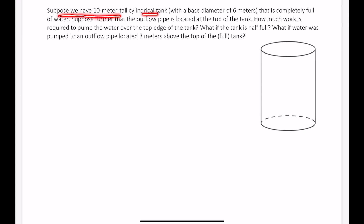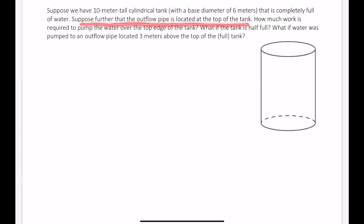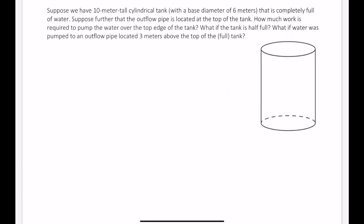Suppose we have a 10-meter tall cylindrical tank with a base diameter of 6 meters that is completely full of water. Suppose further that the outflow pipe is located at the top of the tank. Let's begin by labeling our sketch. We know the height of this tank is 10 meters, so I'm going to set the y-axis to start at the base and go vertically upwards, and the x-axis will also cross through the base.